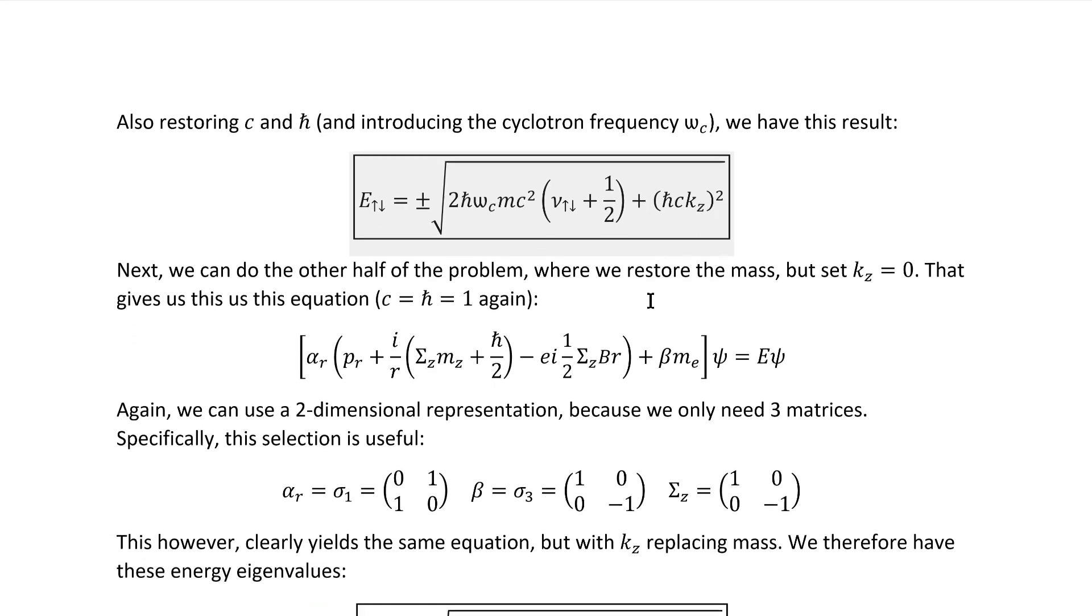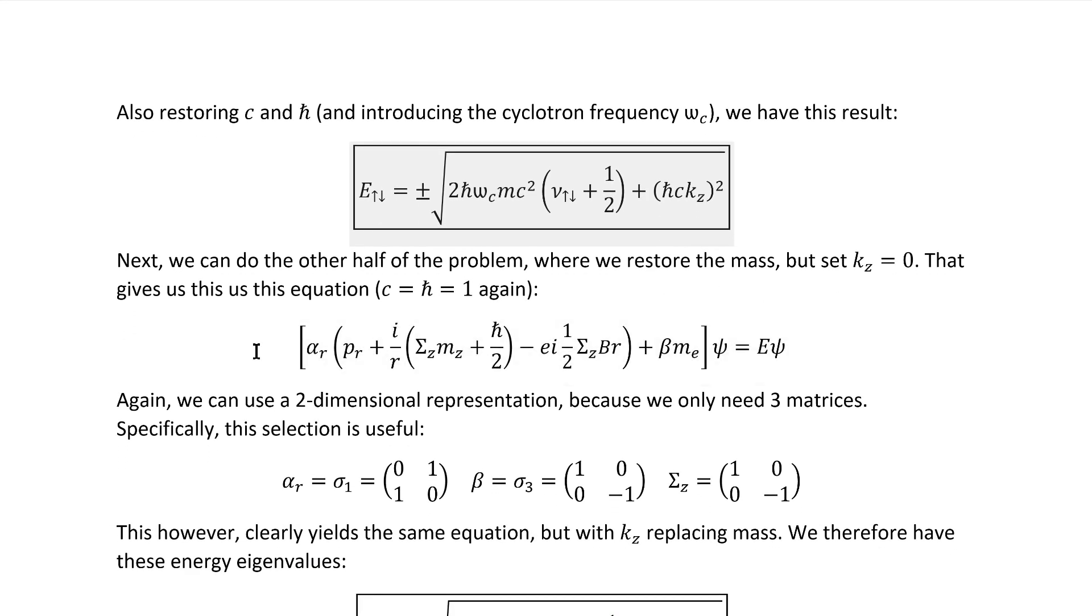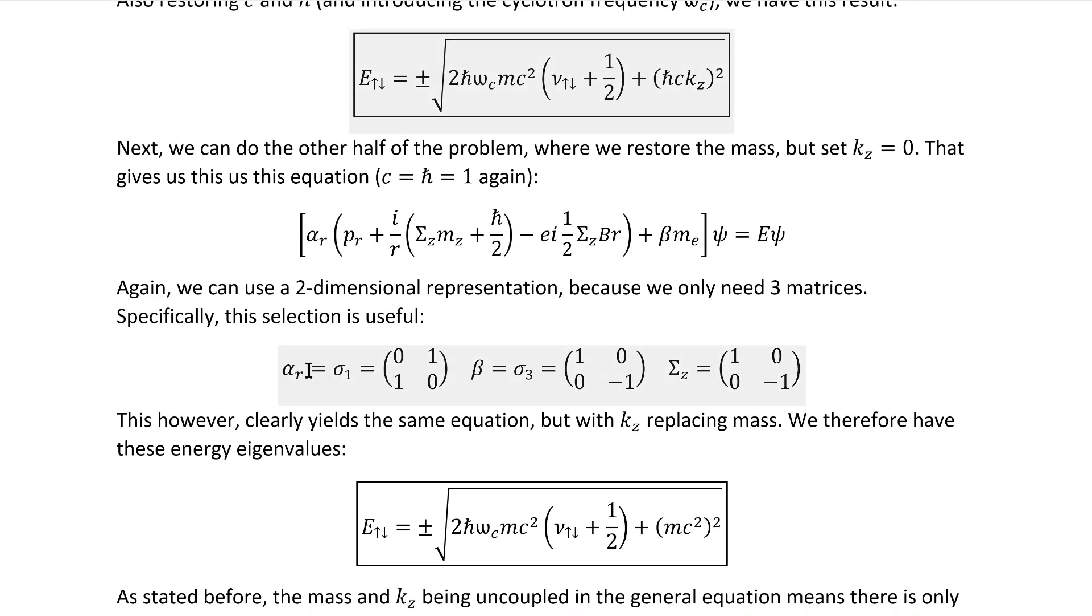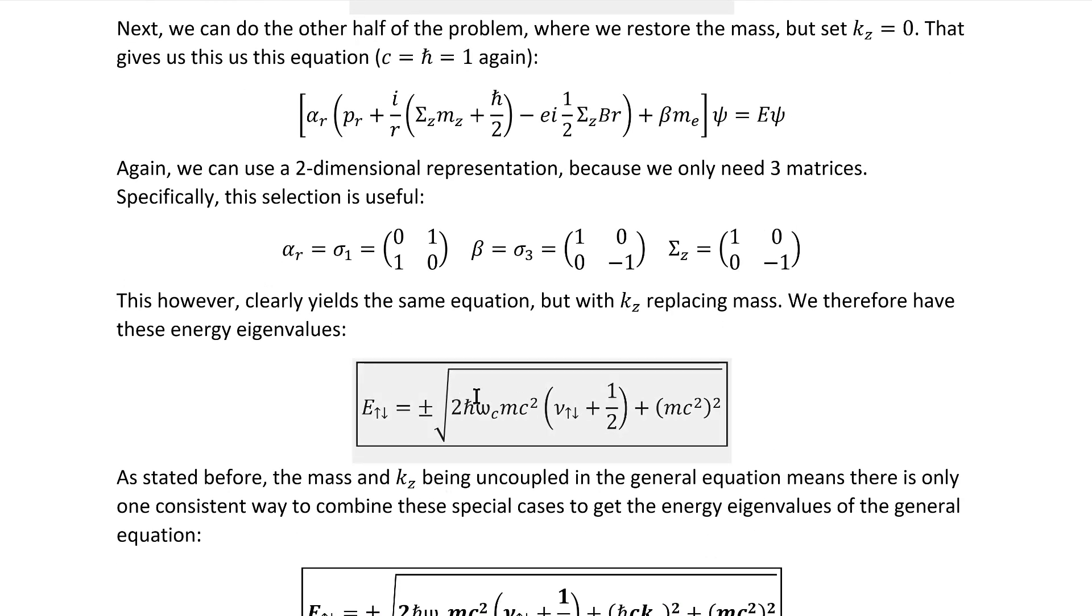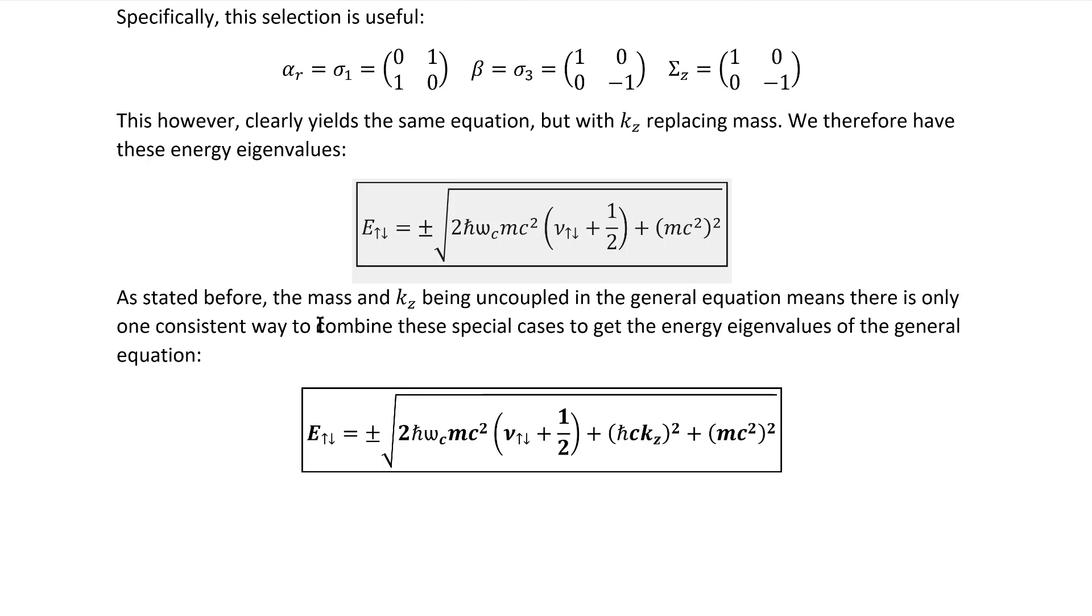We restore the mass and set kz equal to zero. And I again set c and h-bar equal to zero for writing this equation. Again, we're now free to use two-dimensional representation because we only have three matrices. Specifically, if we make this selection, we see that this is actually the same equation that we just worked through the solution of, but with kz replacing mass. We therefore can immediately see what the eigenvalues are.